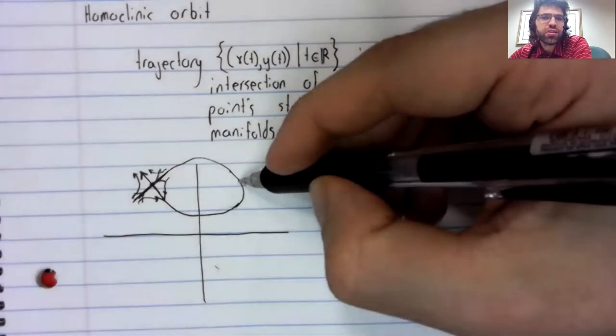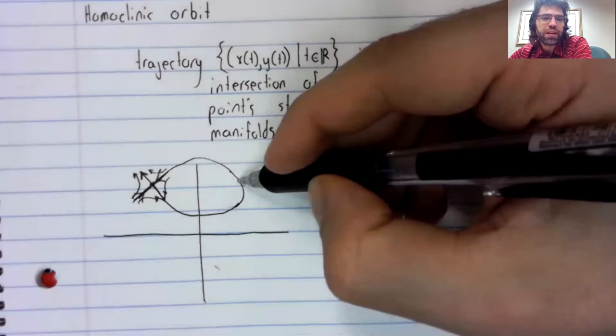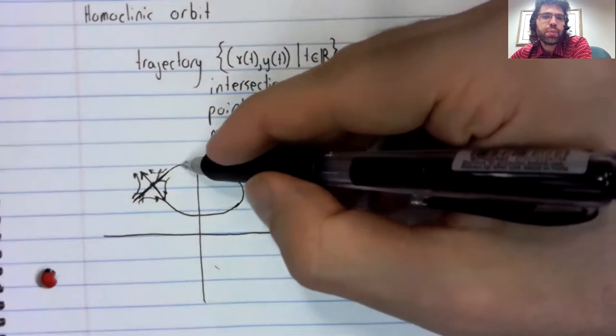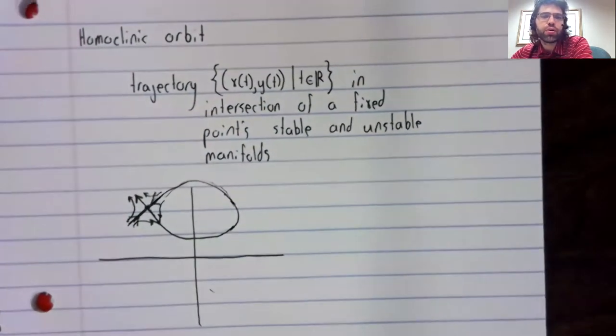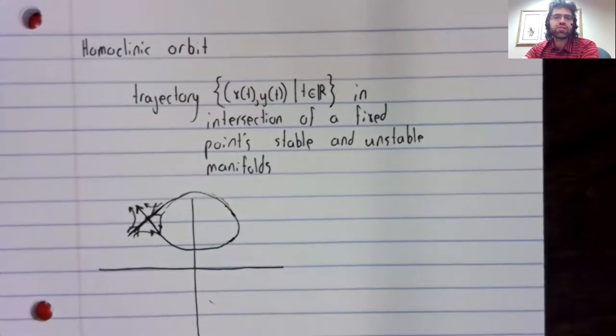And it's in the stable manifold of the fixed point. If we follow time forward, we converge to the fixed point.